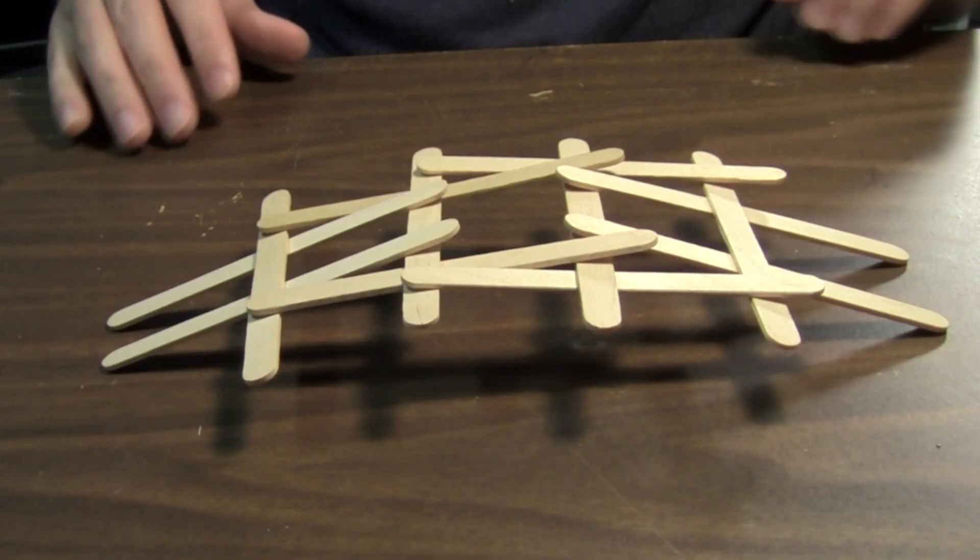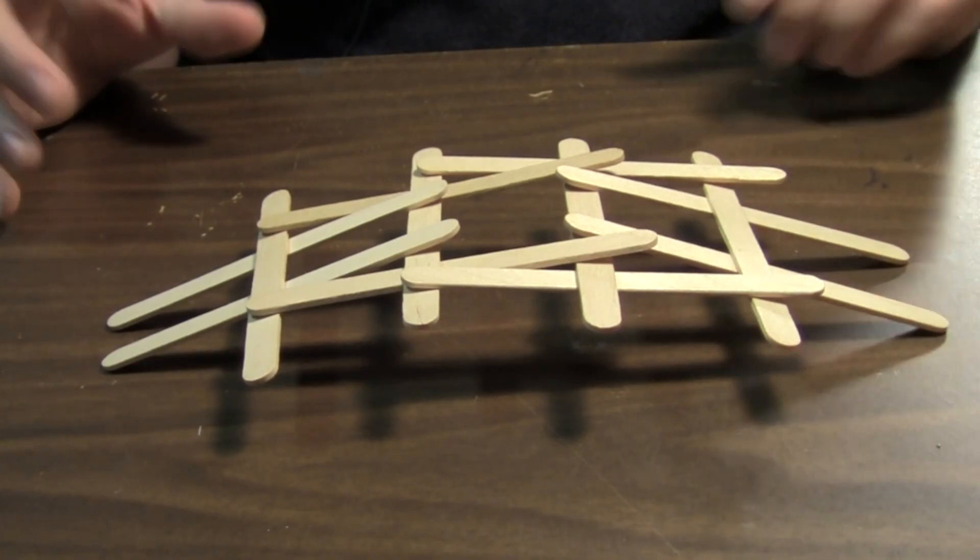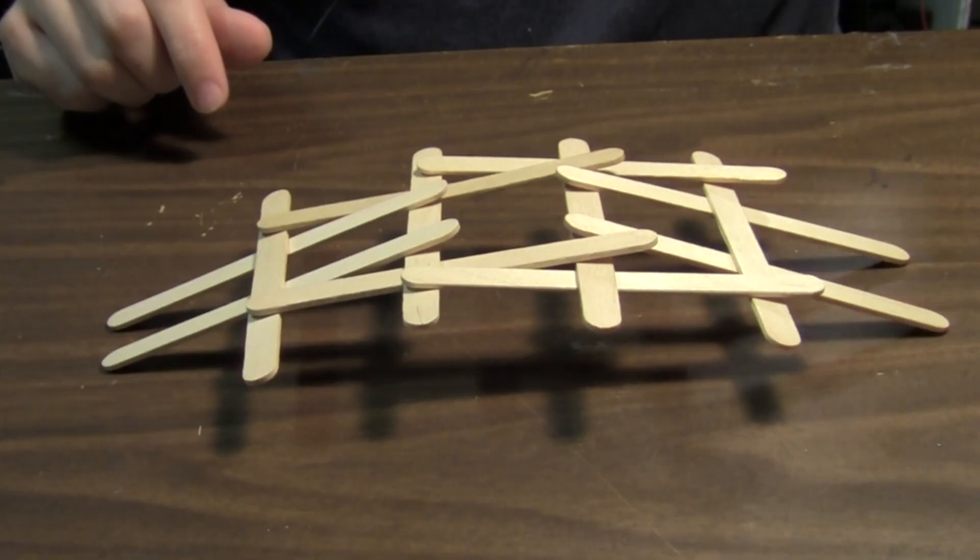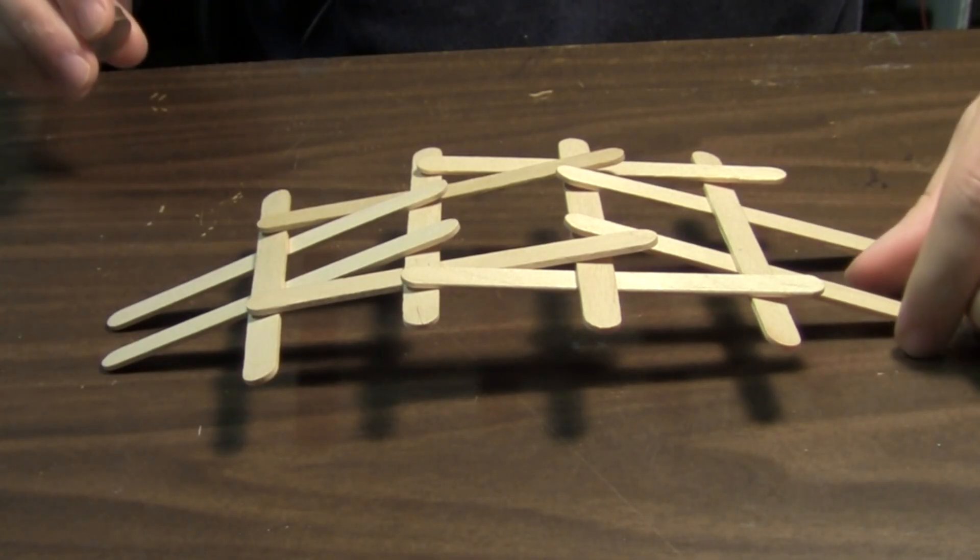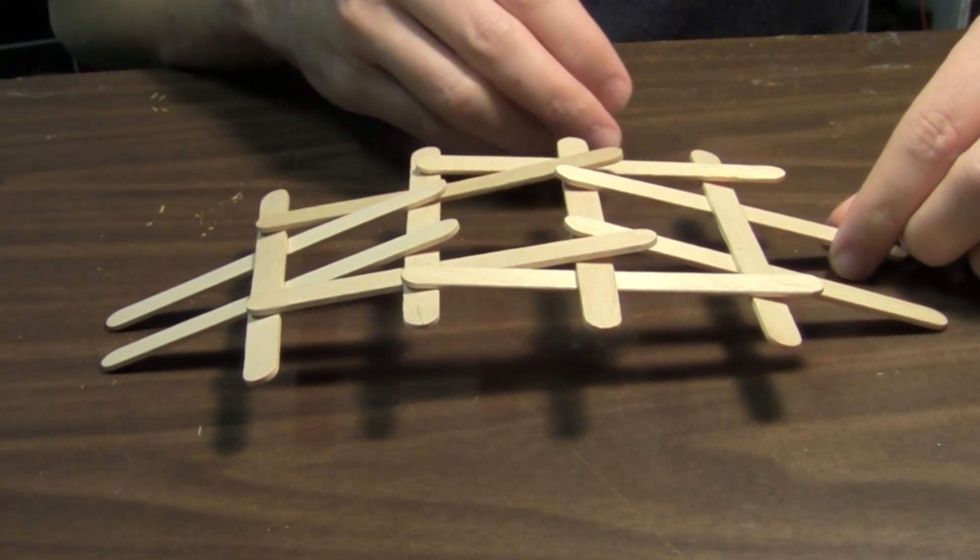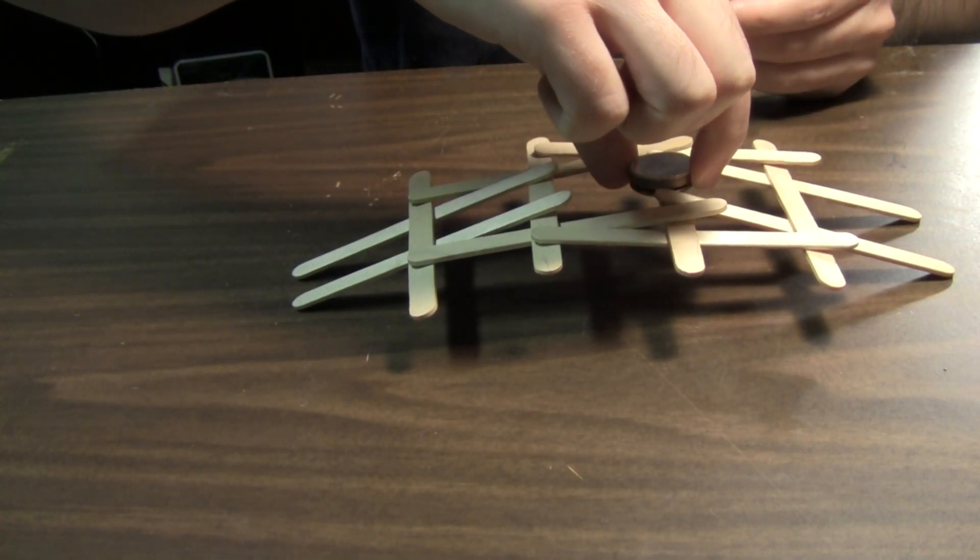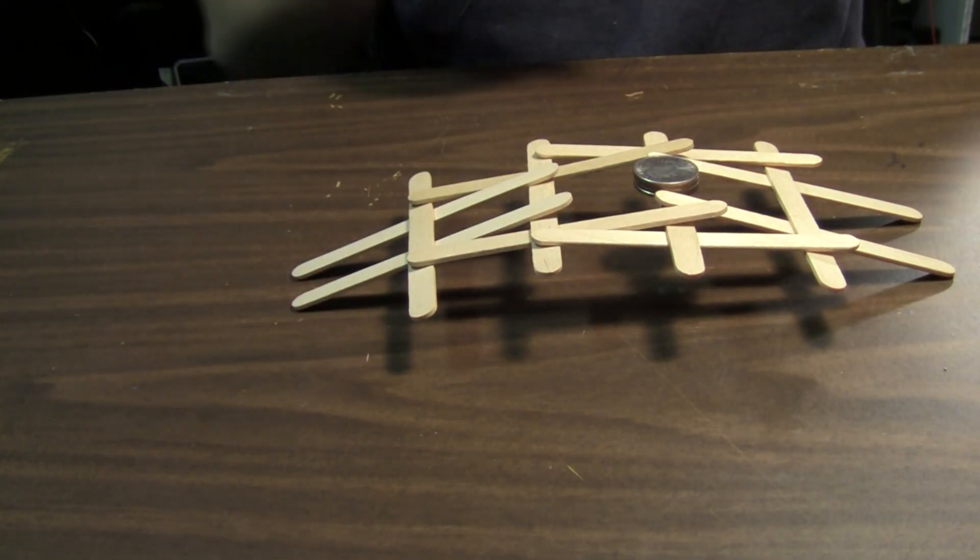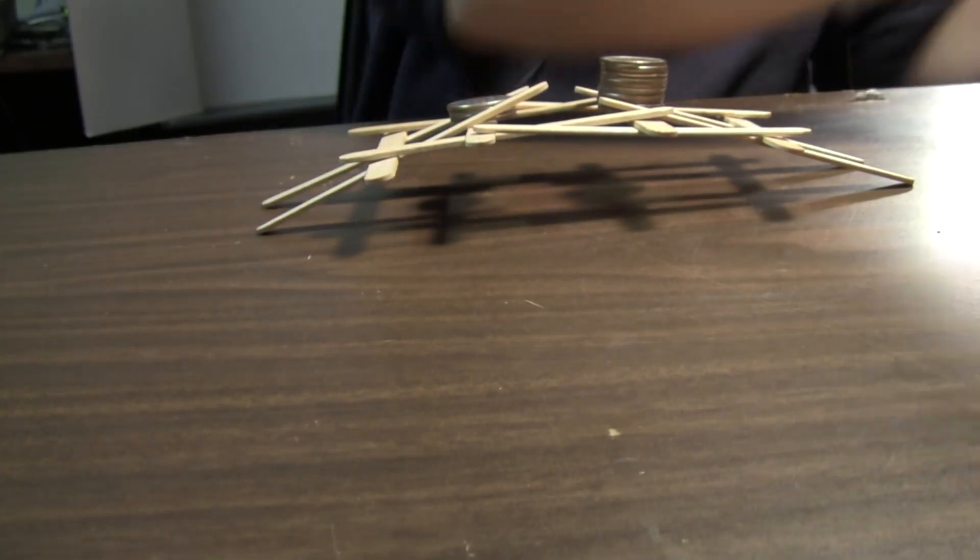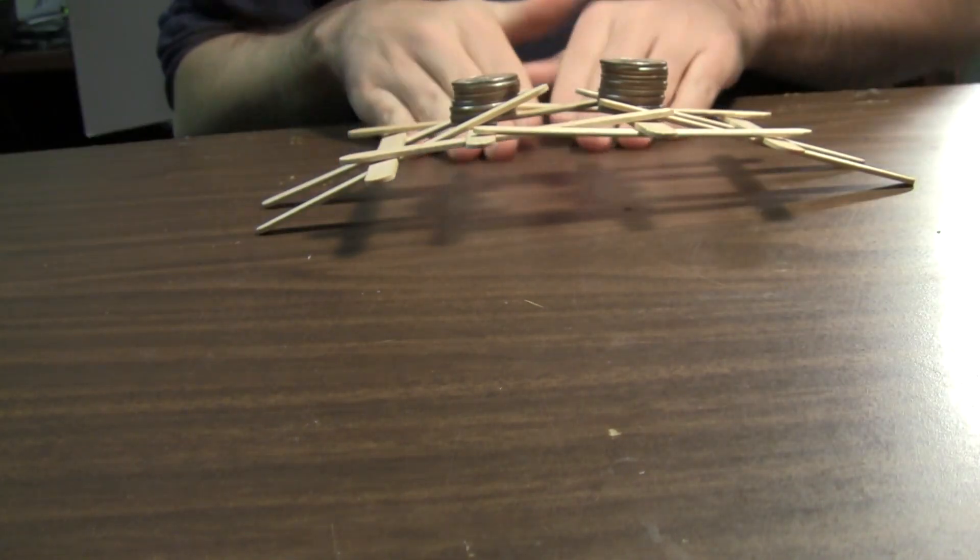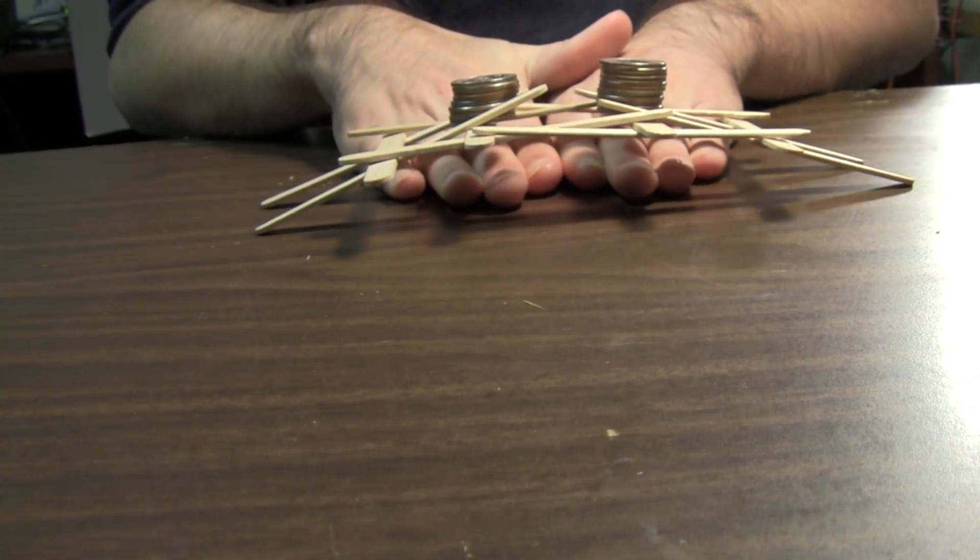So if you look online there's all these videos of people building this same design but using larger pieces of wood and actually walking across it. The neat thing about this is that unlike my previous attempts the more weight there is the more friction there is holding the sticks in place. So it actually gets a little more stable as we load it down. So I've got about four dollars of quarters on there and I can still fit eight fingers under there.